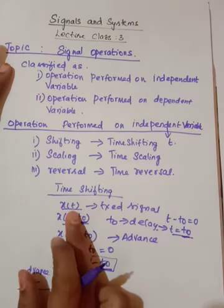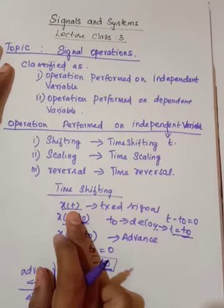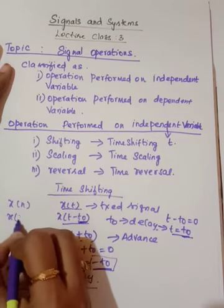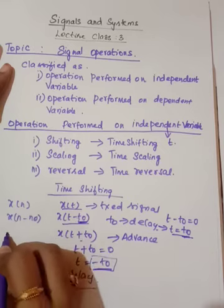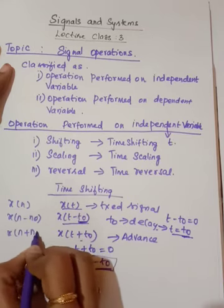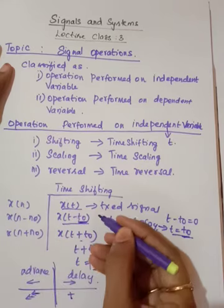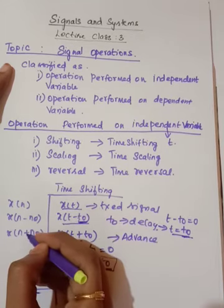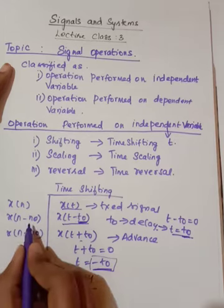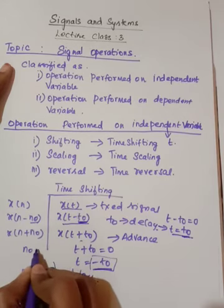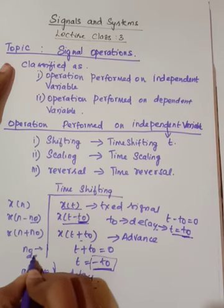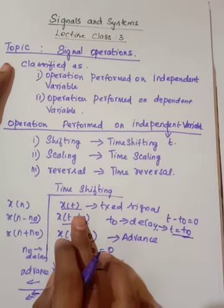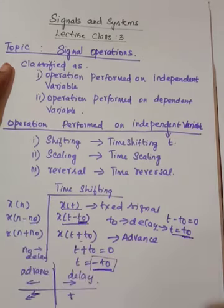We have discussed time shifting for continuous time signals. Similarly, we can apply it to discrete time signals x(n). So x(n - n₀) and x(n + n₀) follow the same operations as for continuous time signals. Here n₀ represents the delay. Both are the same concept — the difference is just whether it is a continuous time signal or a discrete time signal.